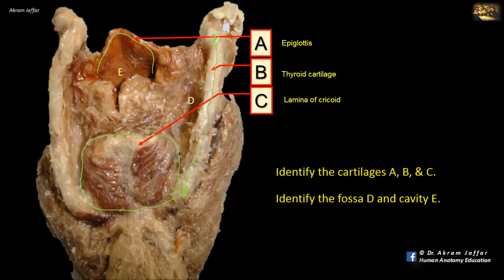Identify the fossa D and the cavity E. Fossa D is the piriform fossa or piriform recess, which is part of the laryngopharynx — the pharynx on the side of the larynx. Here is the entrance into the cavity of the larynx, the inlet of the larynx, and it leads into the vestibule of the larynx. E is the vestibule of the larynx, the part of the laryngeal cavity located above the vestibular folds.